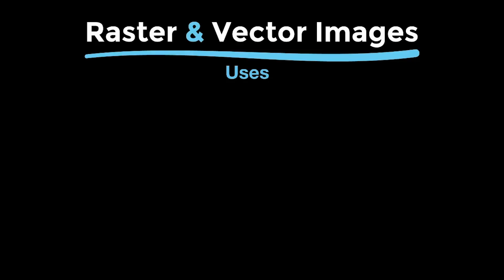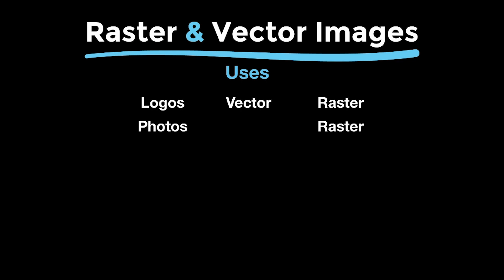Let's go over a few uses of raster and vector images in graphic design. First, logos — logos are almost always going to be vector and saved as an EPS. But you might need to create JPEGs or PNG files for the web, and those are raster graphics. You can also save your logo as an SVG, which is a scalable vector graphic for the web, and more and more people are using those on websites now. Photos are always raster, and there's really no way around this. You can vectorize them, but it makes them look really bad, so I would just leave them in raster format.